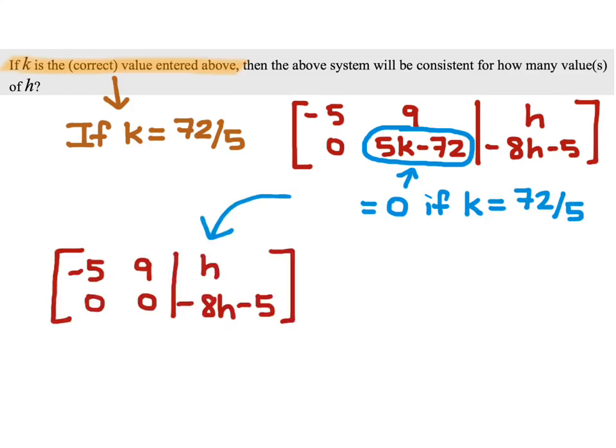Now, this will give us the augmented matrix with the bottom row being 0, 0, negative 8h minus 5.